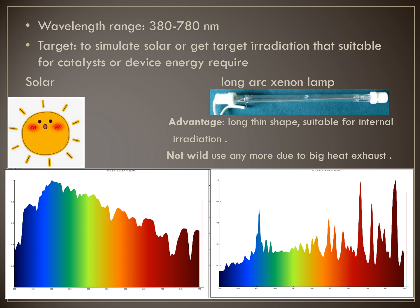Initially, solar visible optical irradiation was provided by a long arc xenon lamp, which simulates the solar spectrum. You can see from the wavelength distribution that the long arc xenon lamp almost covered all the range from 380 to 780 nanometers. However,